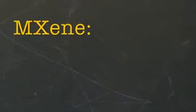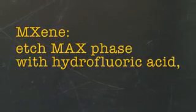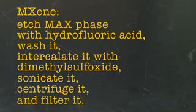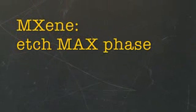In the past, to create pure Maxine films, you'd have to etch Max phase with hydrofluoric acid, wash it, intercalate it with dimethyl sulfoxide, sonicate it, centrifuge it, and filter it. We've managed to cut the process down to just the etching step.